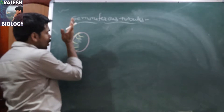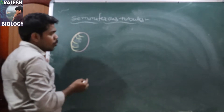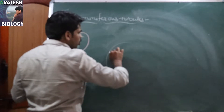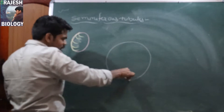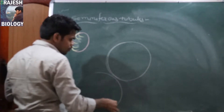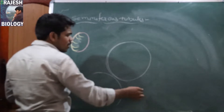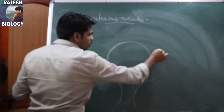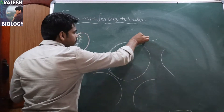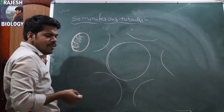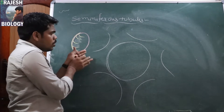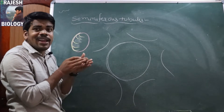I am going to cut one testicular lobule. If I cut the testicular lobule, its transverse section looks like this — it is one lobule. In this one lobule, so many seminiferous tubules are present. Every testicular lobule contains 2 to 3 highly coiled seminiferous tubules.